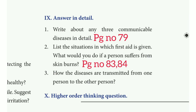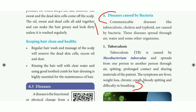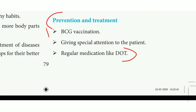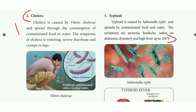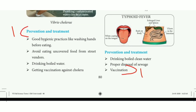Answer in detail. 1st question: Write about any 3 communicable diseases in detail. Take page number 79, under 'Diseases caused by bacteria' — mark the first paragraph. Then tuberculosis — mark from below including the prevention and treatment section (3 points). Then on the next page, cholera and typhoid paragraphs — mark those along with their prevention and treatment points. Total 3 diseases with prevention and treatment — mark all of those.